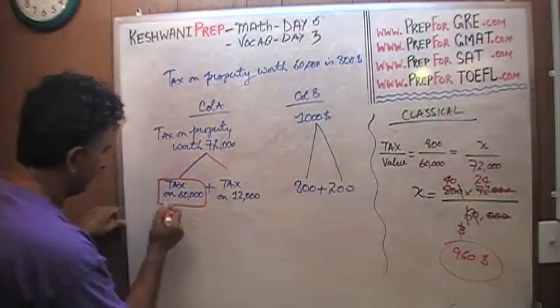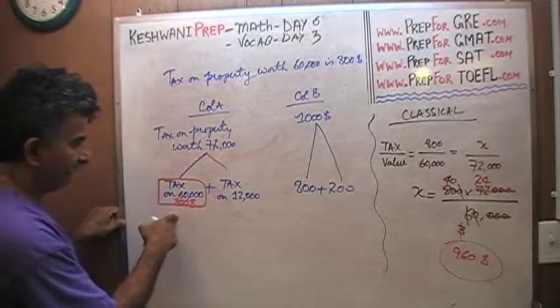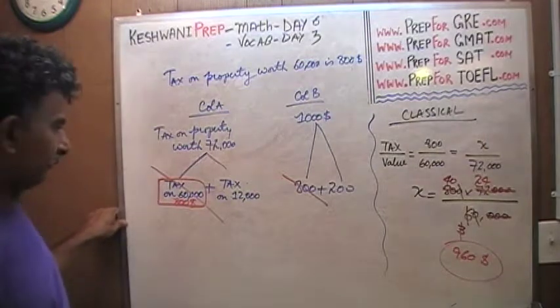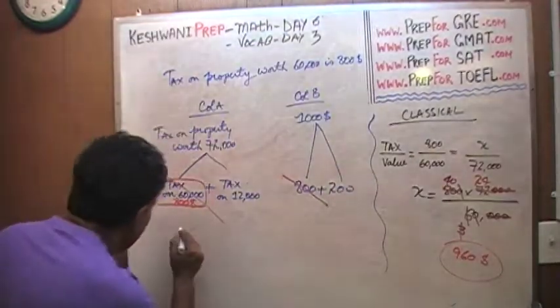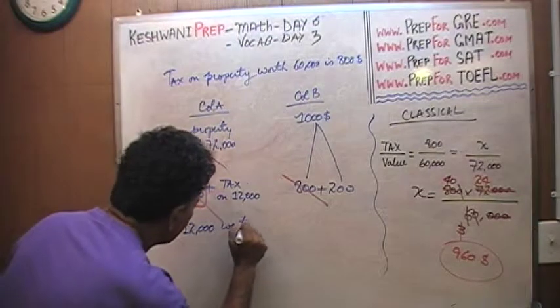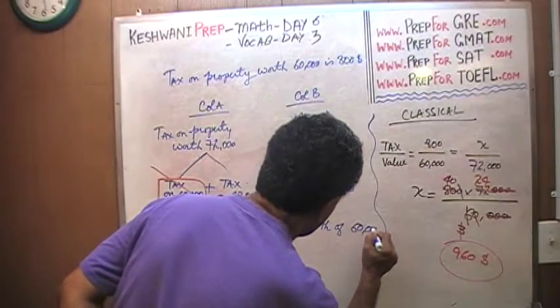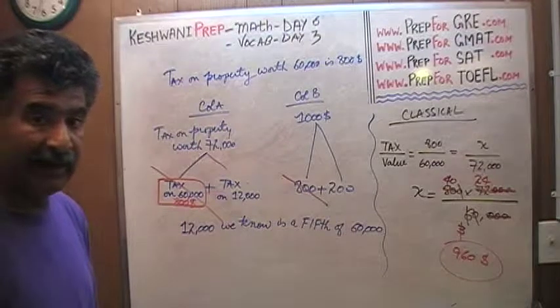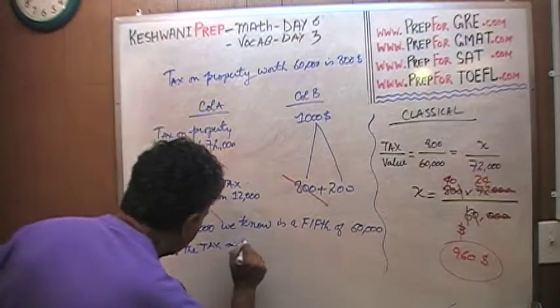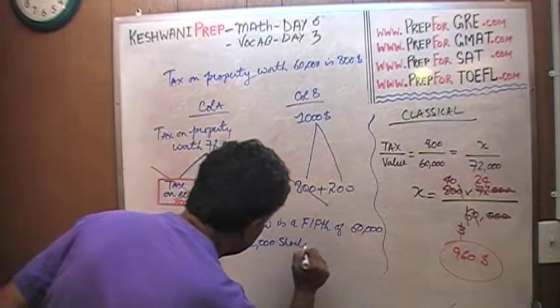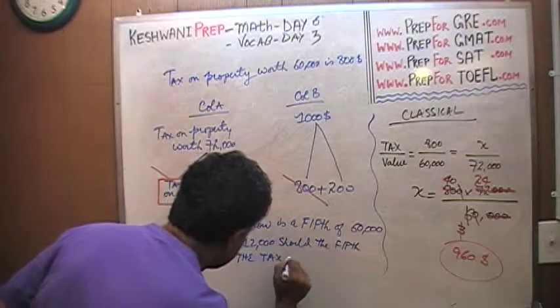Now notice what happens. How much is the tax on $60,000? Well, this quantity, the tax on $60,000, is actually $800. So what you see in the box represents $800. I see $800 here, I see $800 here. You can subtract $800 from both columns. And basically what we have to compare is tax on $12,000 versus $200. Well, $12,000, we know, is a fifth of $60,000. Therefore the tax on $12,000 should be a fifth of the tax on $60,000.